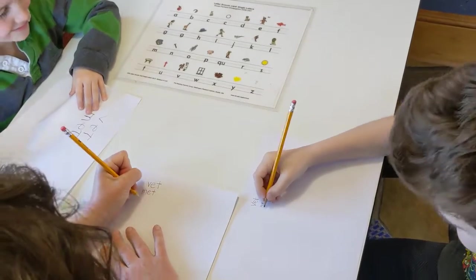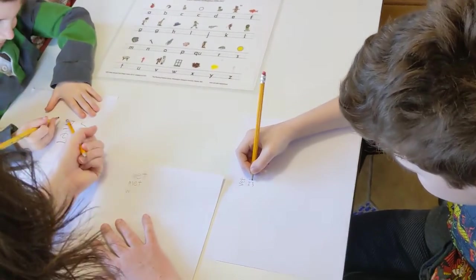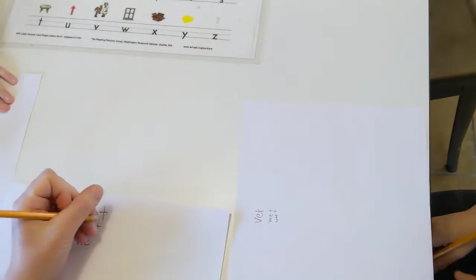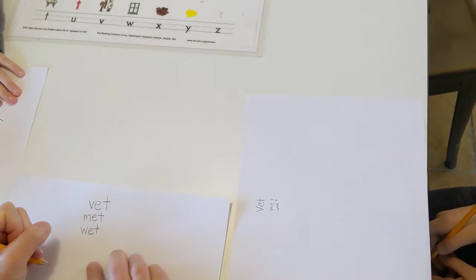Wet. Wet. We're going to change the M to a W. Change your M to a W. I don't know how to do a W. There's a W right there. Wet. And the word is wet.